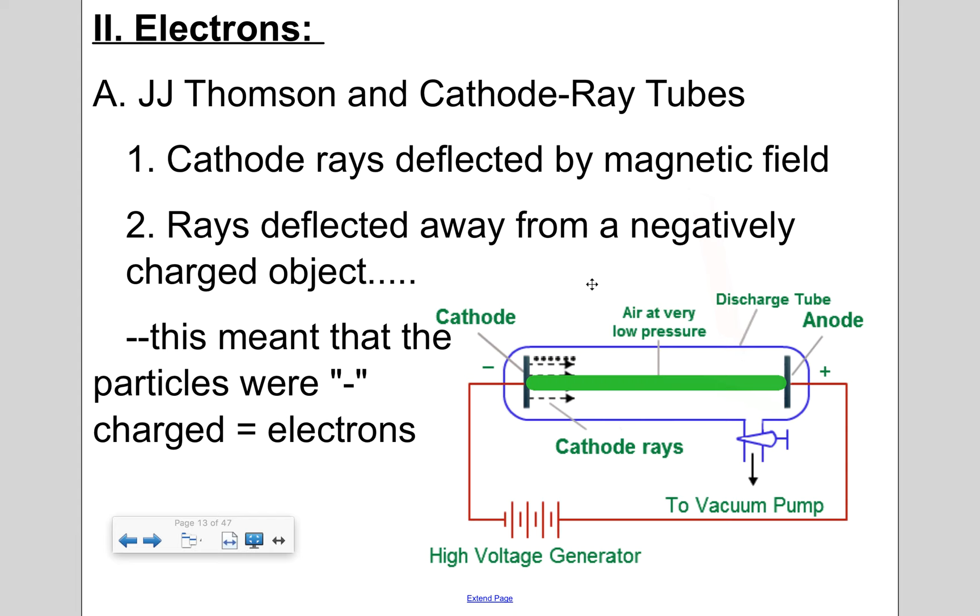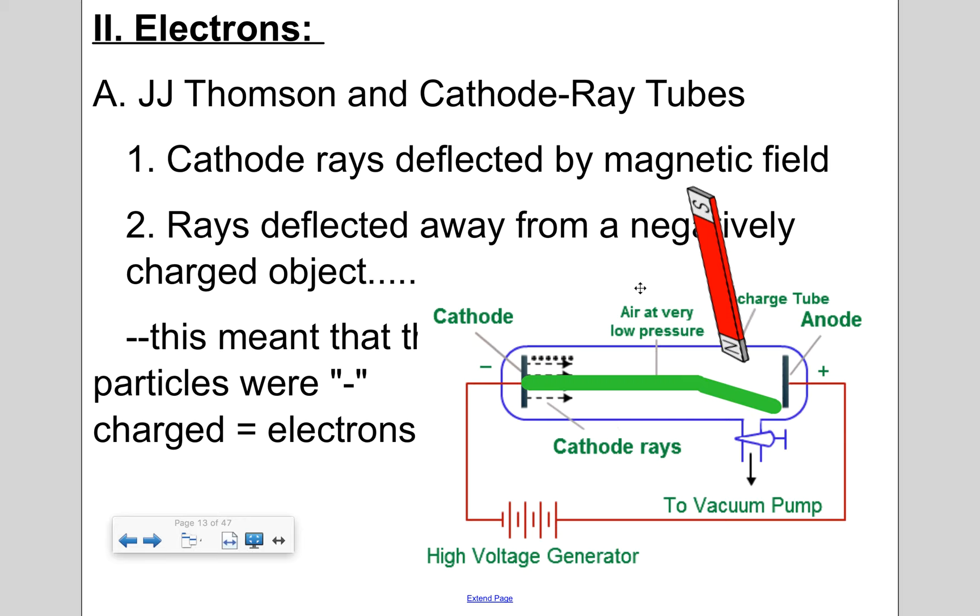But what they were doing is they were sending the current through a cathode ray tube and they see this green laser beam. They noticed that if you apply a magnet, the rays were deflected away from the negatively charged object. So magnets have a positive end and a negative end. And here we have this beam of electrons, electricity going through this cathode ray tube and they're being deflected. So what do you know about magnets and their forces? Well, like forces repel each other. So if this is the negative end of a magnet, well that means that this beam that they're looking at has to be negative as well. This meant that the particles were negatively charged. And these particles were the electrons.